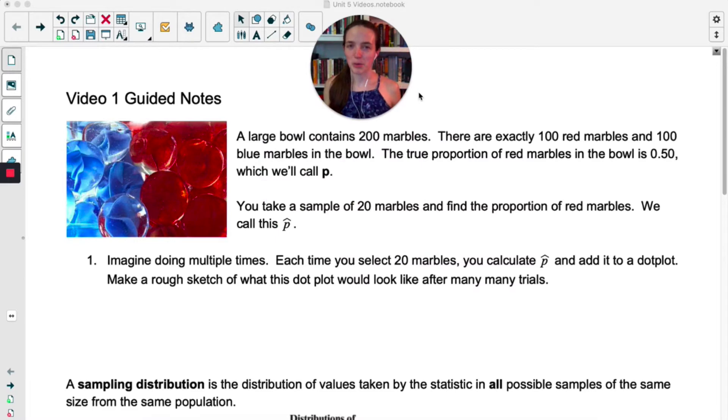Now in our first example, we're not dealing with a population of people, we are dealing with a population of marbles. We have a large bowl with 200 marbles, exactly 100 red, exactly 100 blue. The true proportion of red marbles in the bowl is 0.5, and we're going to call that p.